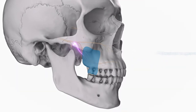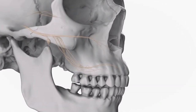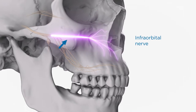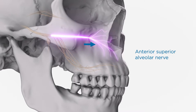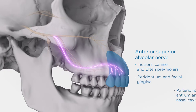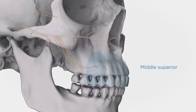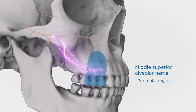The maxillary nerve trunk becomes the infraorbital nerve once it crosses the inferior orbital fissure to travel within the infraorbital groove and canal. During its course, the anterior superior alveolar nerve is given off. After contributing to the superior dental plexus, it provides pulpal innervation to the incisors, canine, and often premolars, the periodontium and facial gingiva, and the anterior portion of the antrum and the floor of the nasal cavity. If present, the middle superior alveolar nerve supplies sensation to the premolar region and the mesial buccal root of the first molar.